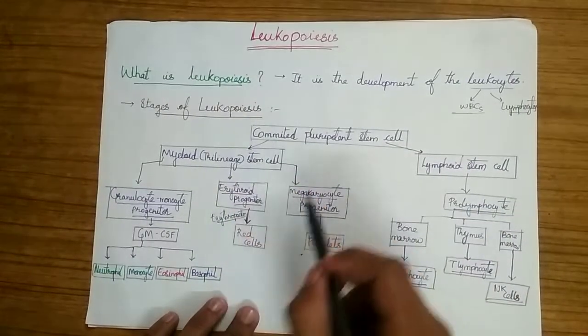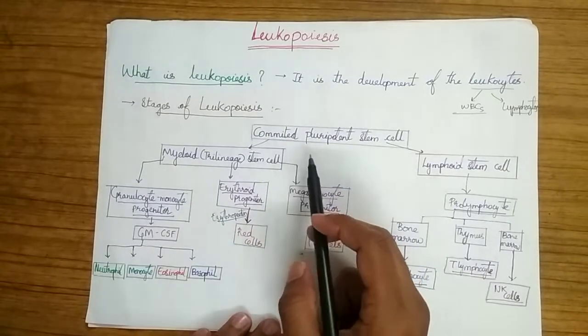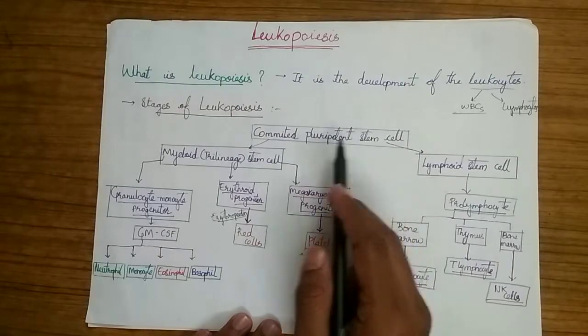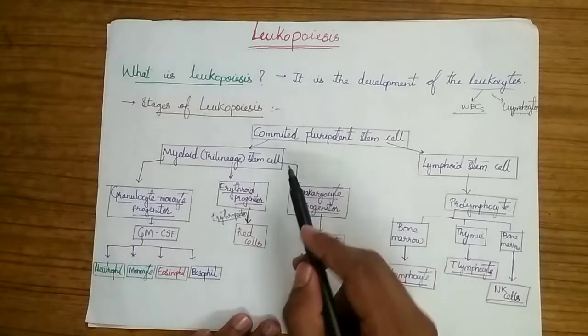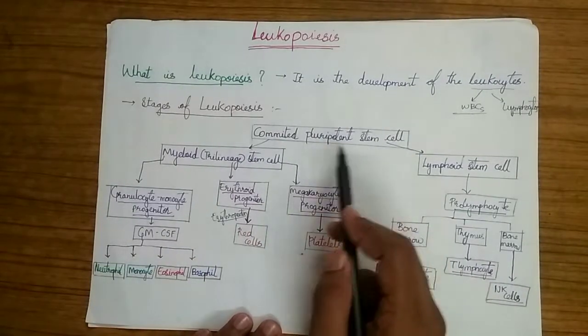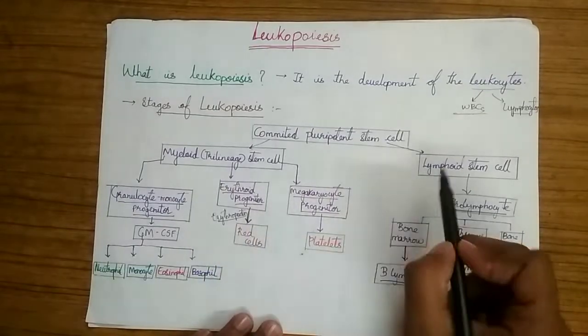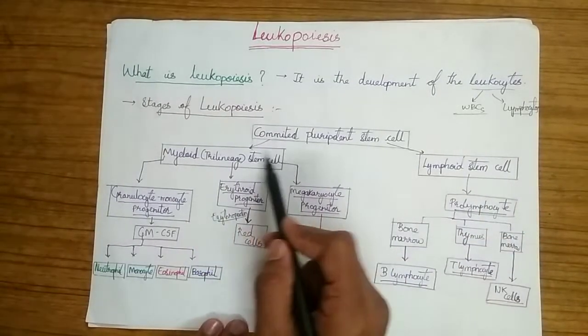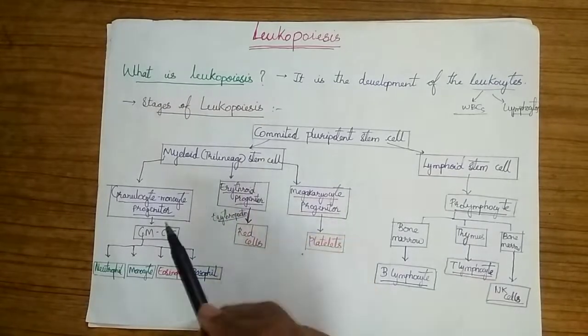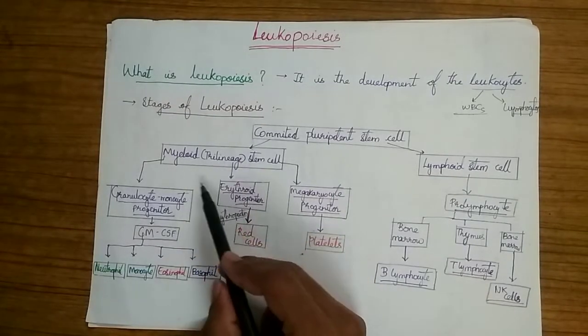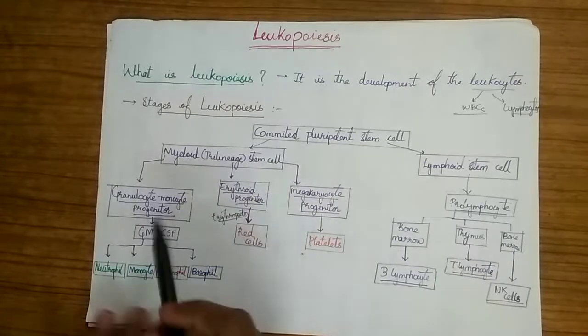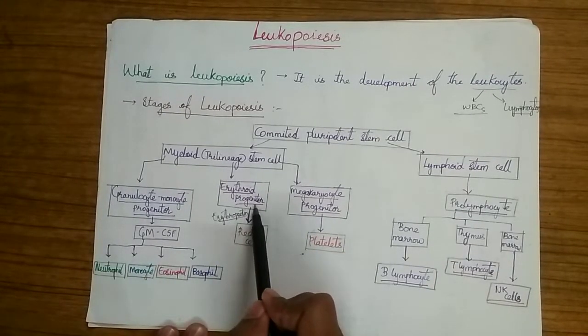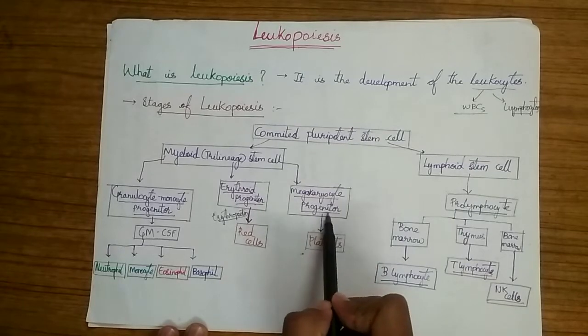Let's talk about the stages of Leukopoiesis. As I have discussed before, there are two types of pluripotent stem cells: committed stem cell and uncommitted pluripotent stem cell. The committed pluripotent stem cell divides into myeloid stem cell and lymphoid stem cell. The myeloid stem cell is also called the trilineous stem cell because it gives rise to three types of progenitor cells: granulocyte monocyte progenitor cell, erythroid progenitor cell, and megakaryocyte progenitor cell.